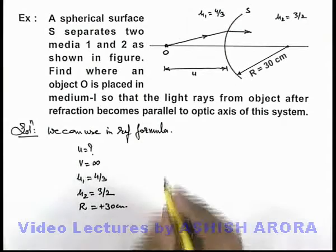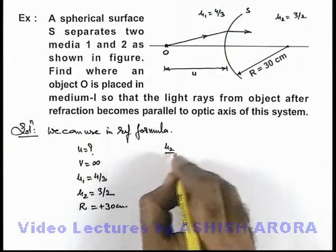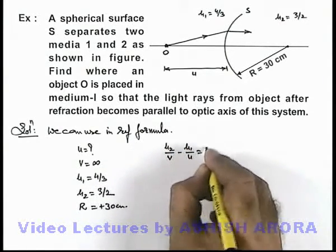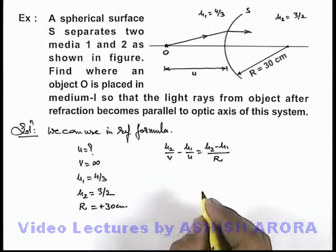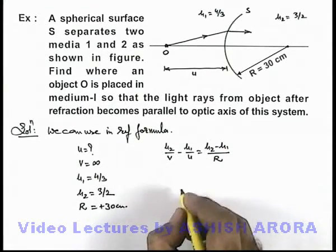Now in this situation, if we use the refraction formula, μ₂/v - μ₁/u = (μ₂ - μ₁)/R. If we substitute the values here, we can see it is